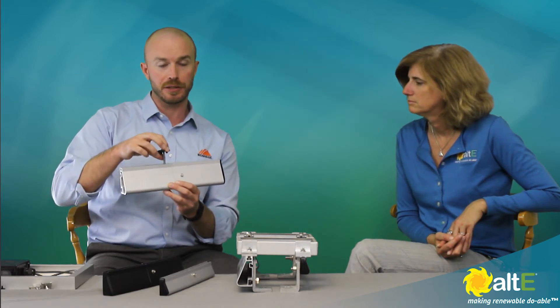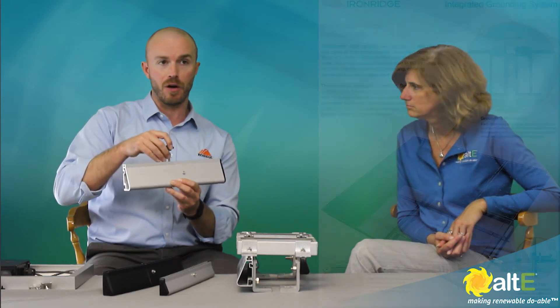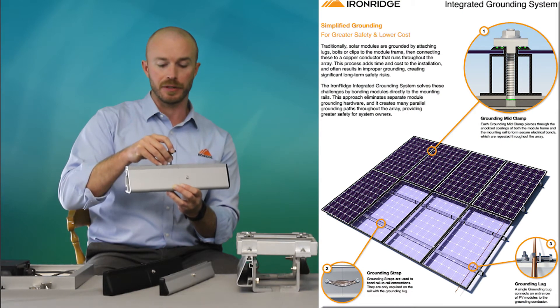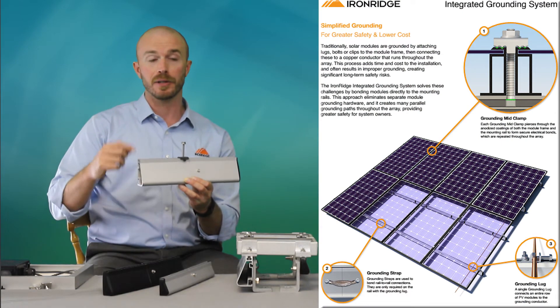So now you're bonded to the module from up here, the rail through down here, so it's all electrically bonded to itself. You now then just have to do a lug at the end of the rail, and only one per row.